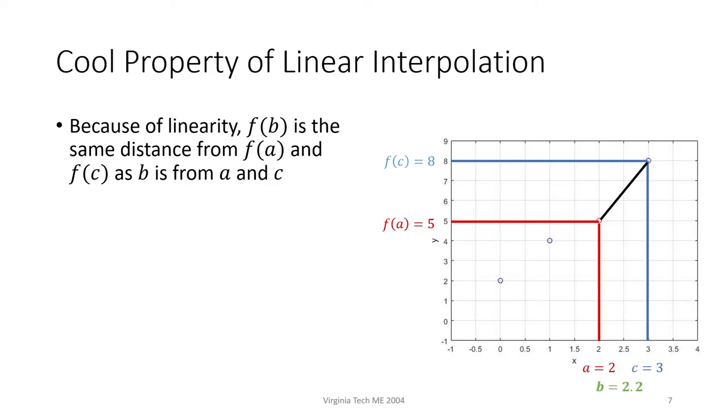For example, let's say b equals 2.2 instead of 2.5. The distance between a and b is 0.2, and the distance between b and c is 0.8, so b is 4 times closer to a than it is to c.